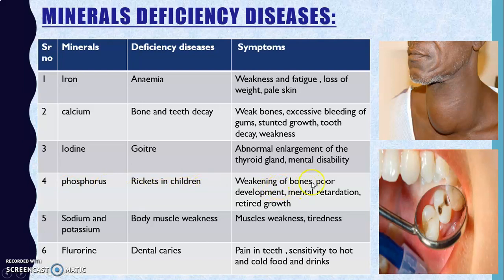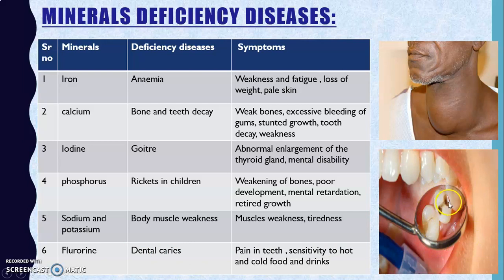Phosphorus deficiency causes rickets in children — bones become weak with poor development and stunted growth. Sodium and potassium deficiency causes muscle weakness and constant tiredness. Fluorine deficiency causes dental caries — cavities in the teeth — with symptoms including tooth pain and sensitivity to hot and cold food and drinks.